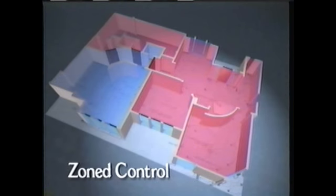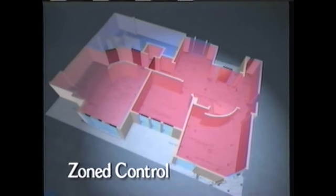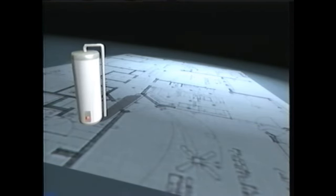Zoned control uses special thermostats, temperature sensors, and dampers that allow the home to only heat or cool the occupied areas. Timers that turn off the water heater at night and back on during the early morning hours can prevent wasted energy when the hot water is not needed.